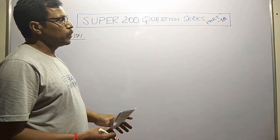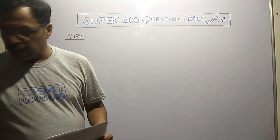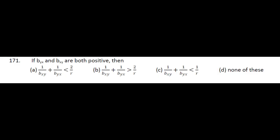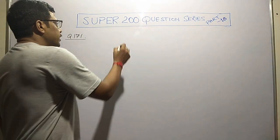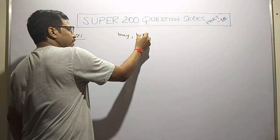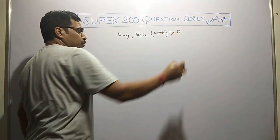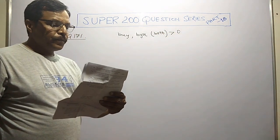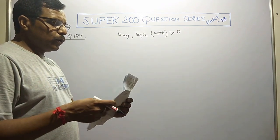The very first question from this Part 18, question number 171. Here we are given that two regression coefficients bxy and byx both are positive, means both are greater than zero, and a few relations are shown. We need to catch which one is correct.